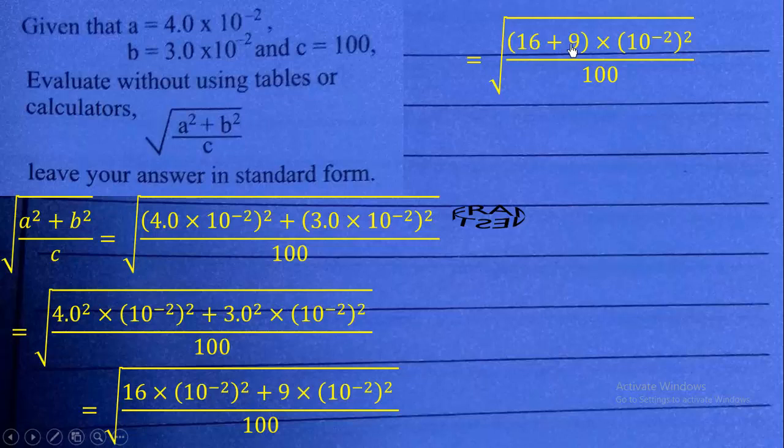Now, we can add 16 and 9, and that will give us 25. At this point, we can share the square root for all of them. We can share the square root for 25, then 10 exponent negative 2 squared, and for the 100. So, let's do that. And that will give us this expression.